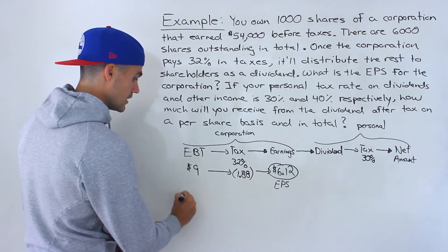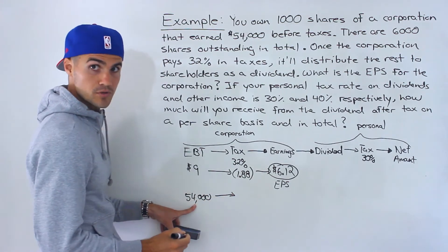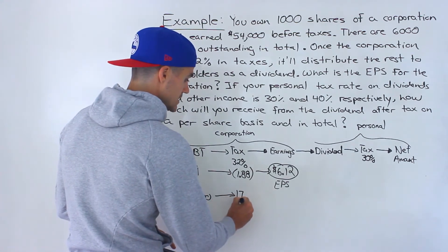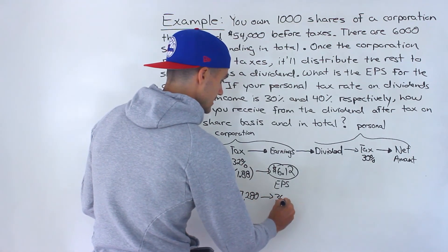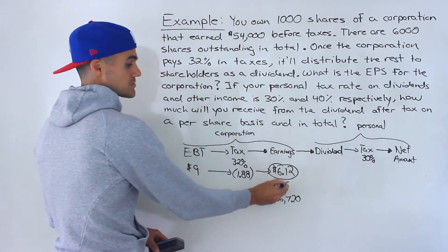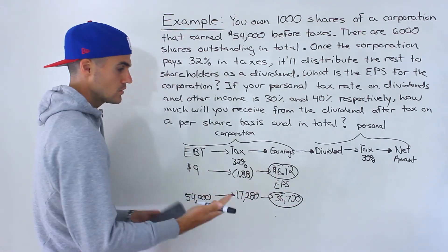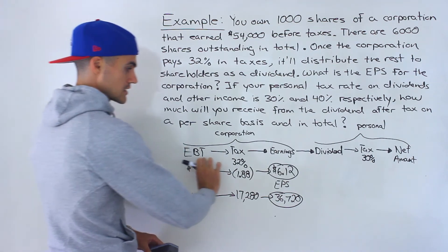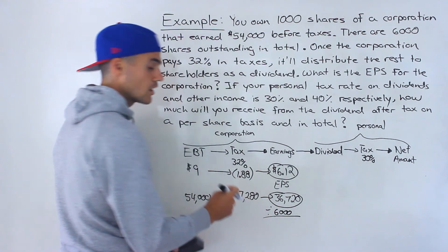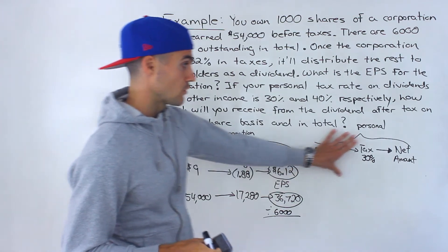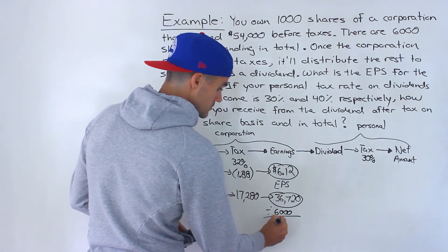You can also do it on a total basis. You could take the $54,000 and pay taxes on that — 32% of $54,000 would be $17,280. Then the total earnings would end up being $36,720. And then to get the earnings per share, you take those total earnings and divide by 6,000 to get the $6.12. So you could go about it that way as well. I'm just going to keep it on a per share basis, dividing by 6,000 — the total shares outstanding, not the amount of shares you own.